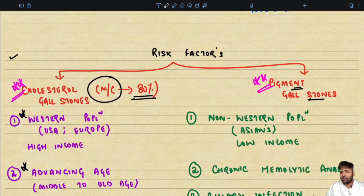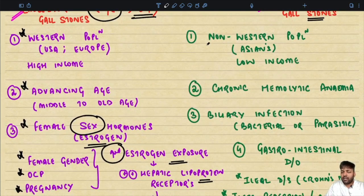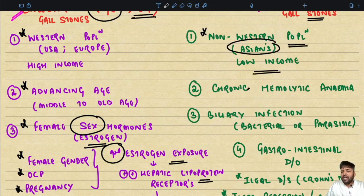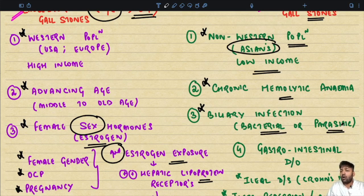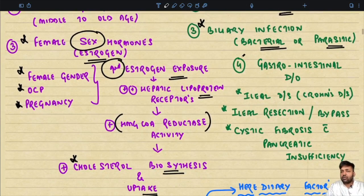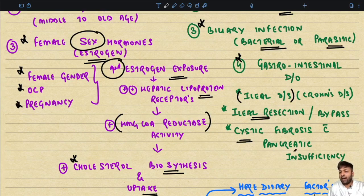Pigment gallstones, in contrast, affect the non-western population, especially Asians and low-income countries. They develop in settings of chronic low-grade hemolytic anemia or biliary infection — bacterial or parasitic, such as Ascaris lumbricoides or Clonorchis sinensis (also called Opistorchis sinensis). Gastrointestinal disorders such as ileal disease (Crohn's disease), ileal resection, bypass surgery, or cystic fibrosis with pancreatic insufficiency also predispose to pigment gallstone formation.